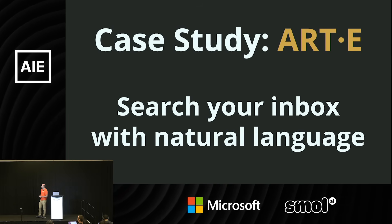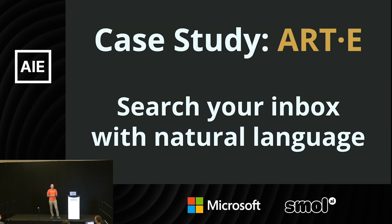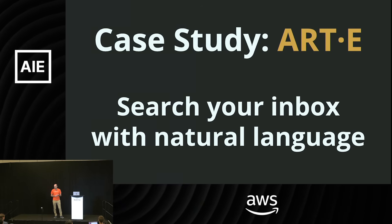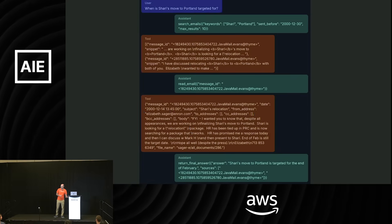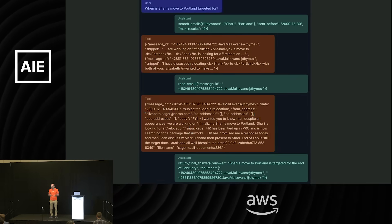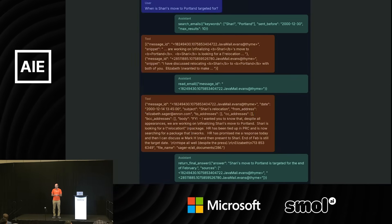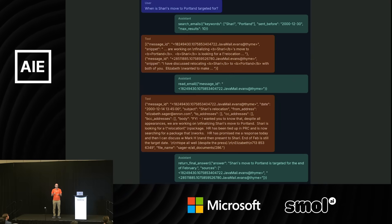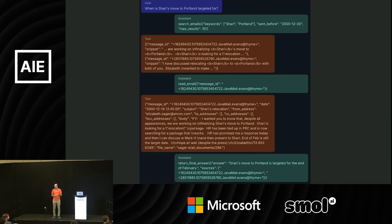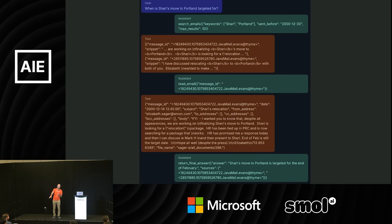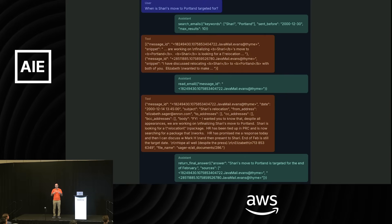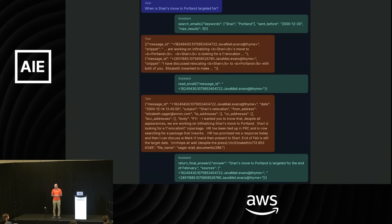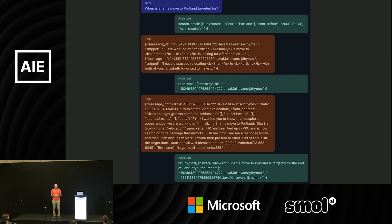So what is the project we're going to be talking about? It's a project called ARTE. It is a natural language assistant that helps you answer questions from your email inbox. For example, you might ask: when is Sherry's move to Portland targeted for? You ask this question to the assistant, it searches your inbox using several tools — a search tool, a read email tool — and then it answers the final question. This is what's going on behind the scenes, and it helps make the conversation very grounded in a specific task.